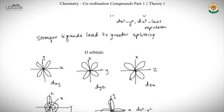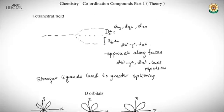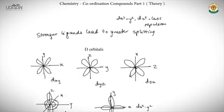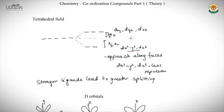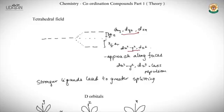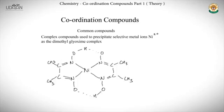For tetrahedral field splitting, ligands approach along the faces. The dxy, dyz, dzx orbitals (between axes) experience more repulsion and are raised in energy, while dz² and dx²-y² are stabilized. The net energy balance is maintained. An important rule: stronger ligands (higher in the spectrochemical series) lead to greater crystal field splitting.